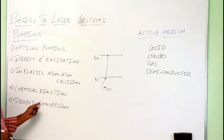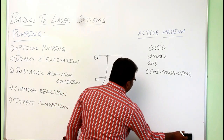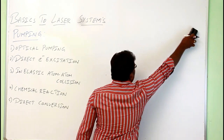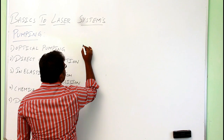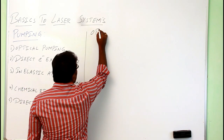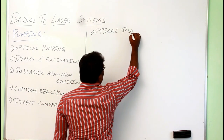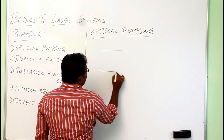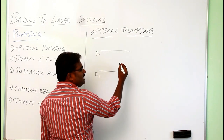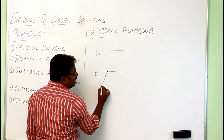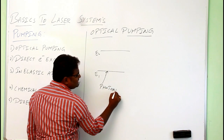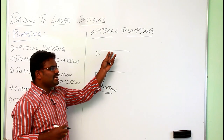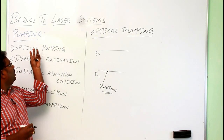First, what is meant by optical pumping? To raise the atom from ground state to excited state — from E1 level to E2 level — if we supply a photon, which is a light energy, the atoms absorb the photon energy and go to the excited state. Since we are using light energy to pump the electrons, it is known as optical pumping.